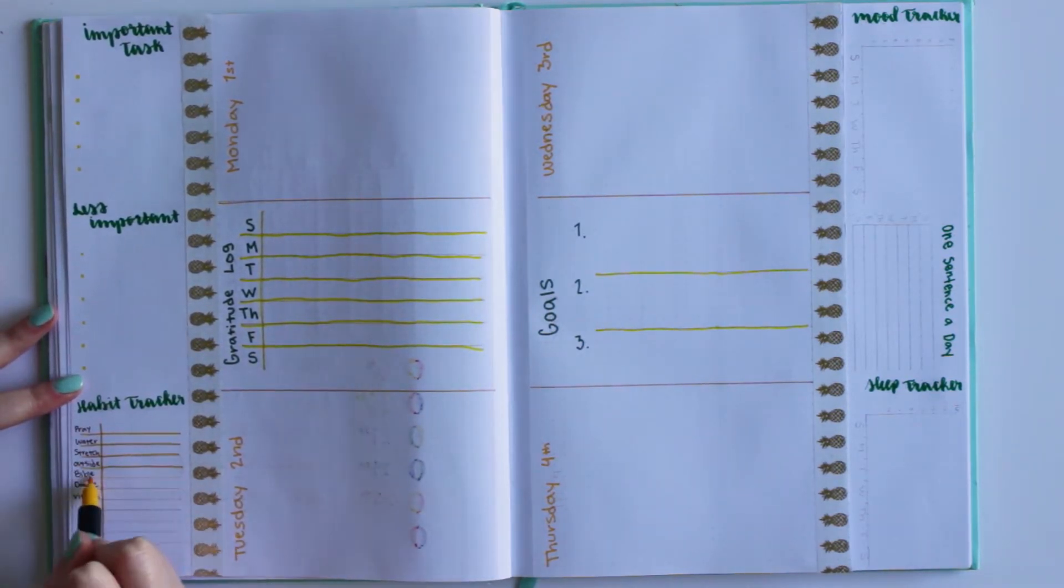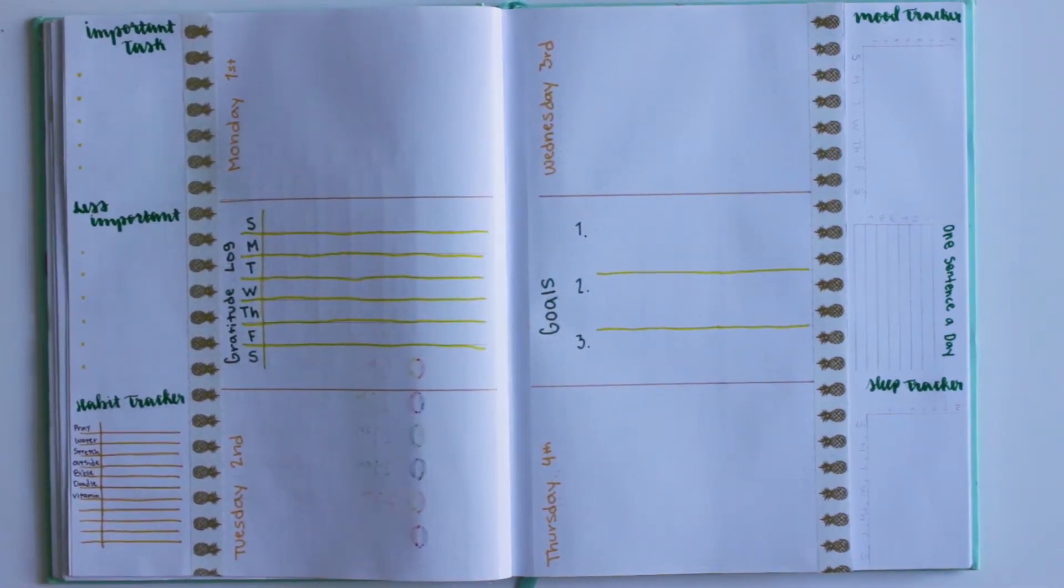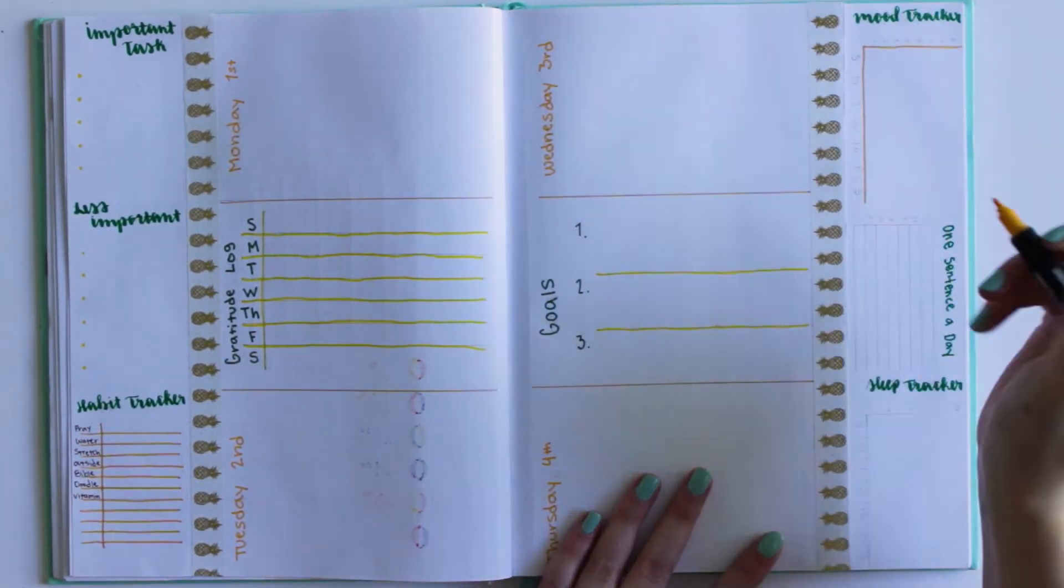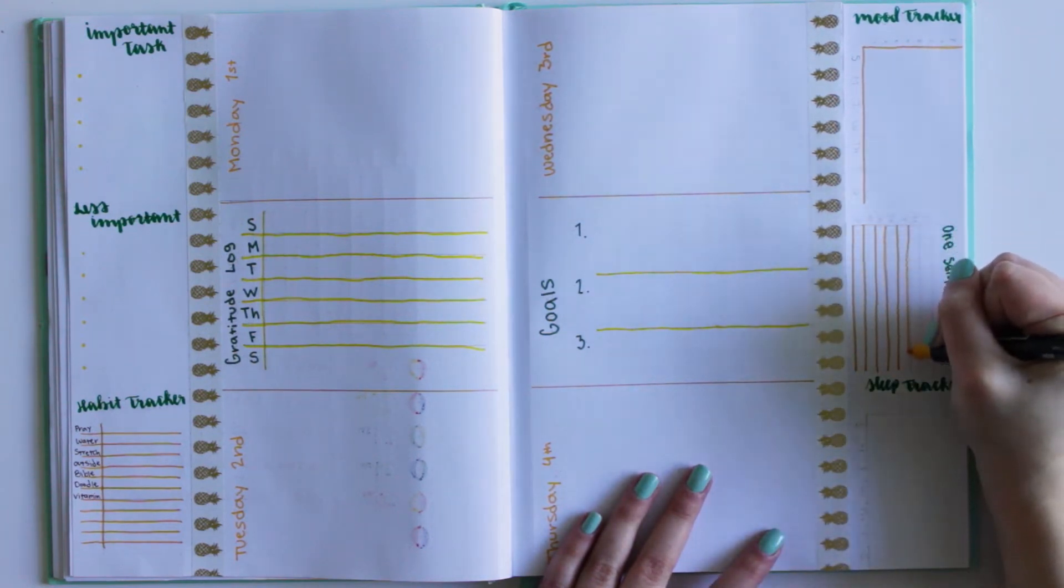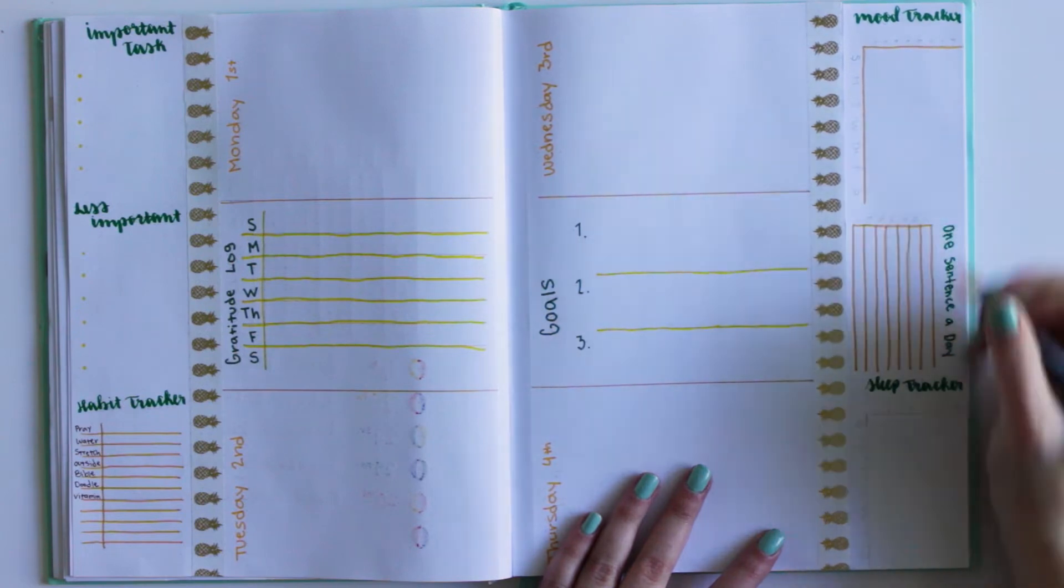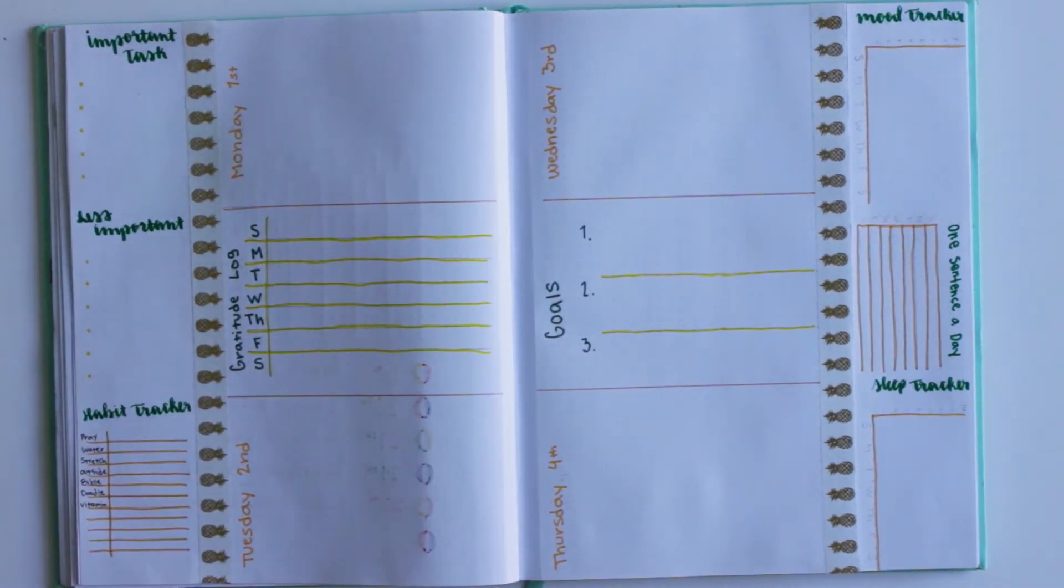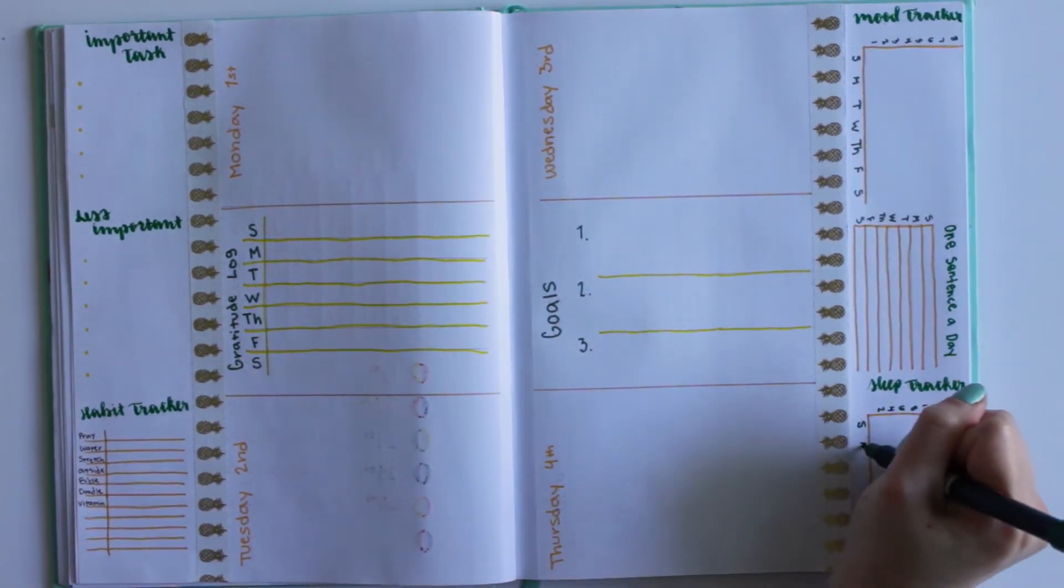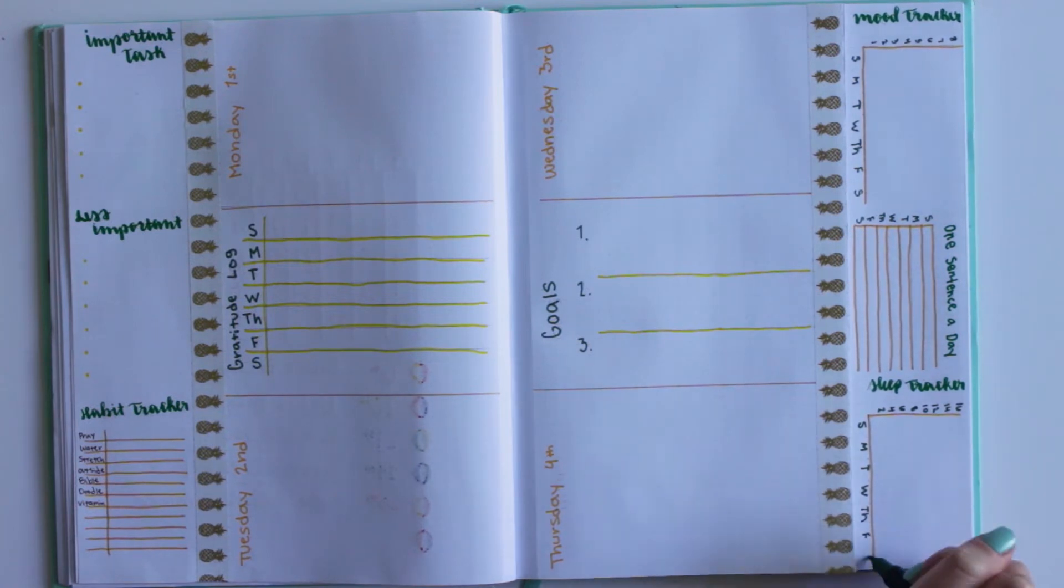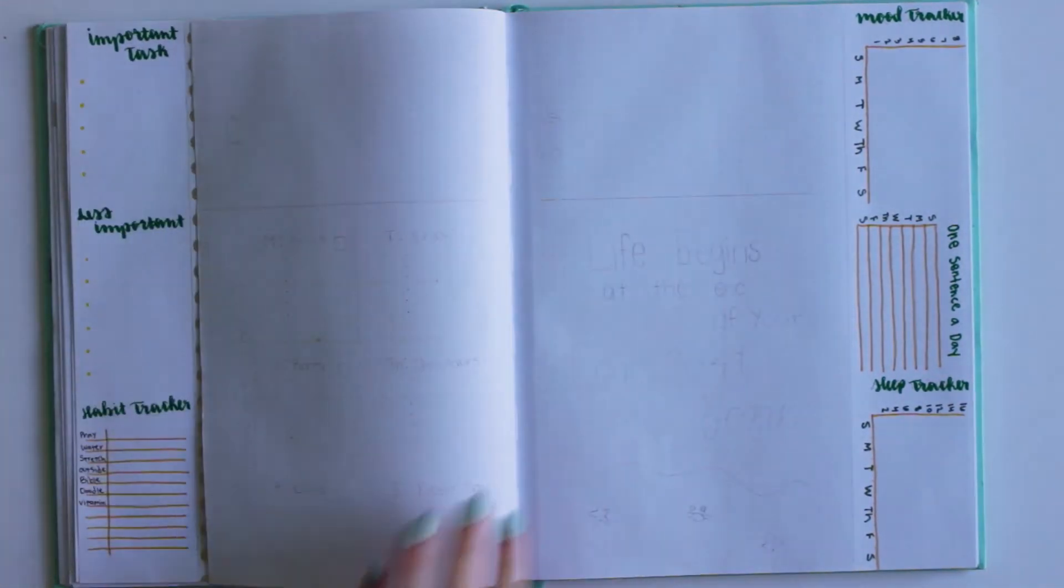My mood tracker goes all the way up to eight. It didn't fit to ten, but eight will be my max. And then I have the days of the week, and then my sleep tracker goes up to sixteen. And no, I never get sixteen hours of sleep, that is way too much, but I had to fill the whole bar and I wanted to go by twos because if I went by ones, sometimes I get more than eight hours of sleep. Oh, and the middle one is one sentence a day. I spilled my markers there, all over my page, and I was laughing a little bit, but that was on accident. Anyways, the one sentence a day is kind of going to reflect my mood tracker just so that I can explain my mood for that day.